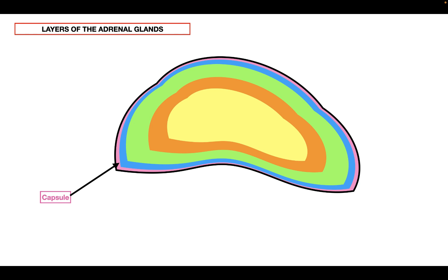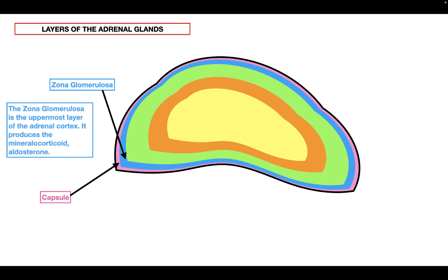Below the capsule, we have the adrenal cortex, and the adrenal cortex is made up of three layers. The first layer is the zona glomerulosa, represented by the blue layer on this diagram. The zona glomerulosa is the uppermost layer of the adrenal cortex, and it's responsible for mainly producing the mineralocorticoid aldosterone.